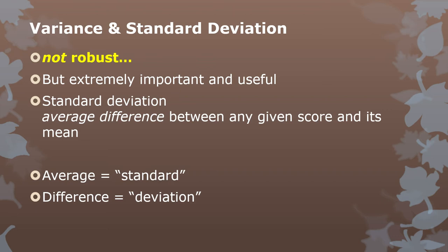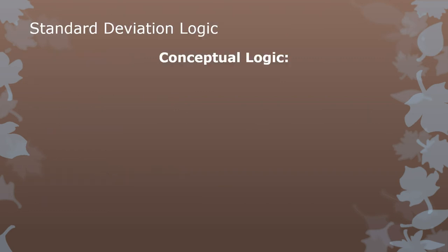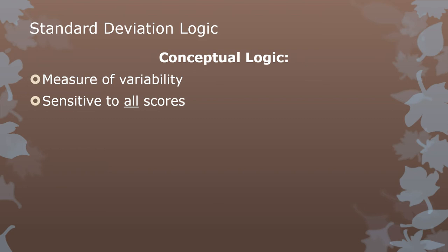The logic goes like this: why isn't everything the mean? You start out with a mean, in this theoretical sense, and all the scores are the mean. But then they start to deviate for reasons we don't necessarily understand, so we do research to figure out why they deviated — why is there this variability, why is there this spread? Now you're starting to get why spread is so important. The conceptual logic of standard deviation is that we need to measure variability that's sensitive to all the scores.